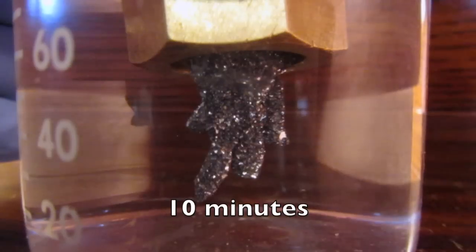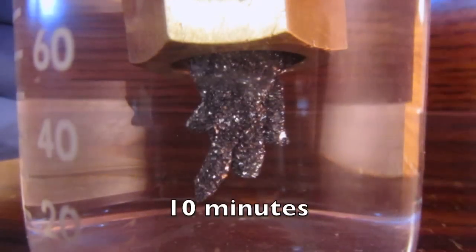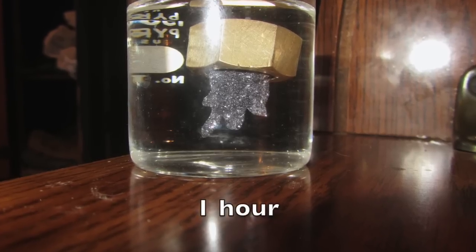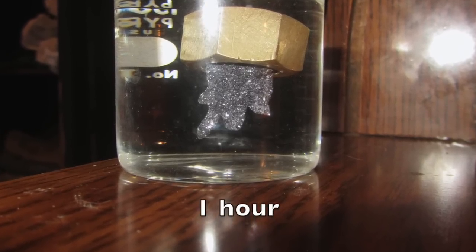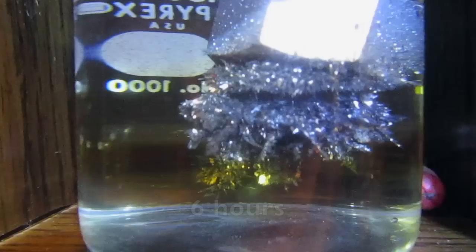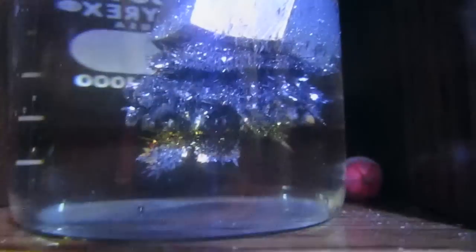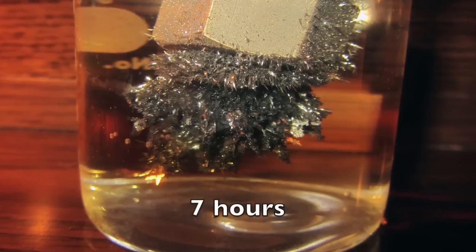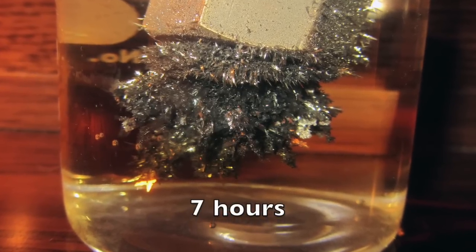This is called a single displacement reaction. What's happening here is lead acetate is reacting with the zinc to form zinc acetate and elemental lead, which deposits in the form of small crystals that over time grow out to larger crystals and form a branch-like, tree-like shape. That's how it gets the name tree of lead.